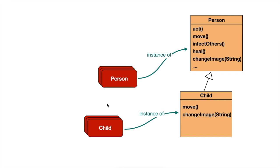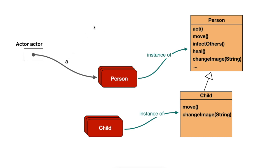Now when the simulation is run, the Greenfoot framework invokes the Act method on every object. The Greenfoot framework itself has a variable of type Actor, and it has a loop where it goes around and assigns every Actor object that lives in the world in turn to this variable, and then invokes the Act method on it. It will do that one by one for every object in the simulation in turn.